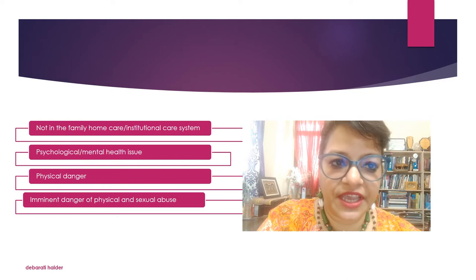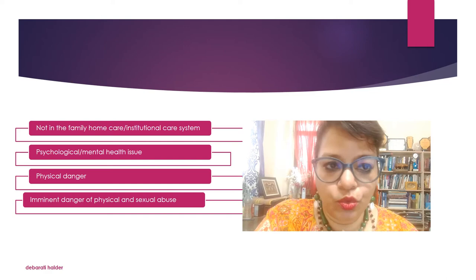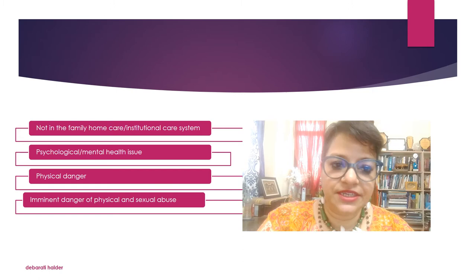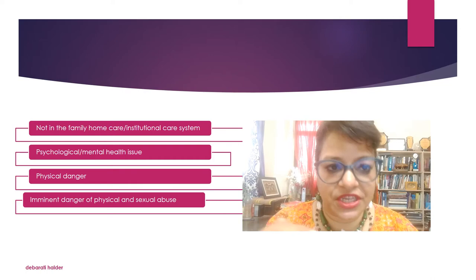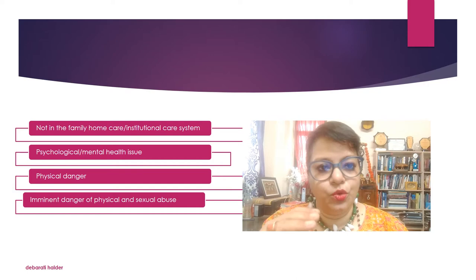The definition of child in need of care and protection which the JJ Act 2015 discusses can be found in Section 2, sub-clause 14. That is an exhaustive definition and it has got nearly about 12 points to explain who can be considered as a child in need of care and protection. I have made a classification on the basis of this sub-clause under four main topics.